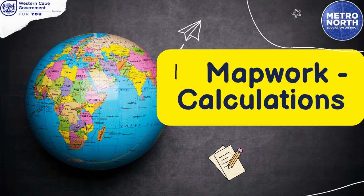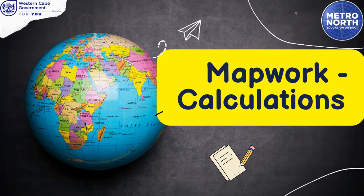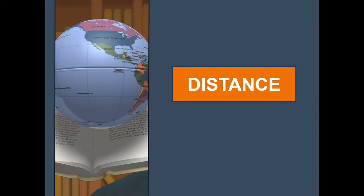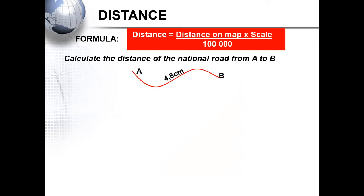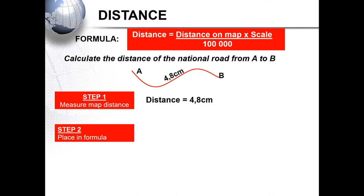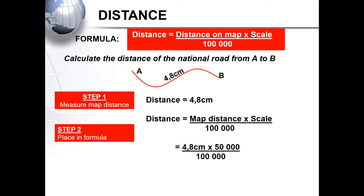Now let's have a look at the various calculations you will be expected to do. We will start with distance. When measuring distance, it is important to know all your formulas. If asked to calculate the distance on the national road from A to B, you will use your ruler to determine your map distance. I will then place the distance into the formula using the correct scale. In this example, we are measuring on a topographic map, therefore the scale of 1:50,000.